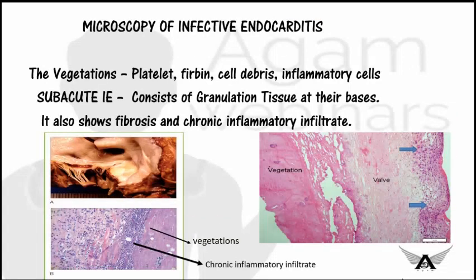In microscopy, we take a cut section from the infected area and examine it under a microscope. On examination we can see presence of platelets, fibrin, cell debris, inflammatory cells, and bacteria. These make up the microscopic features of infective endocarditis.